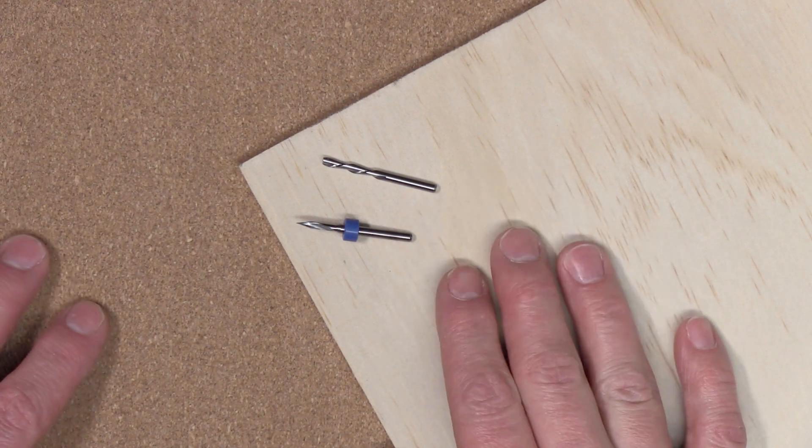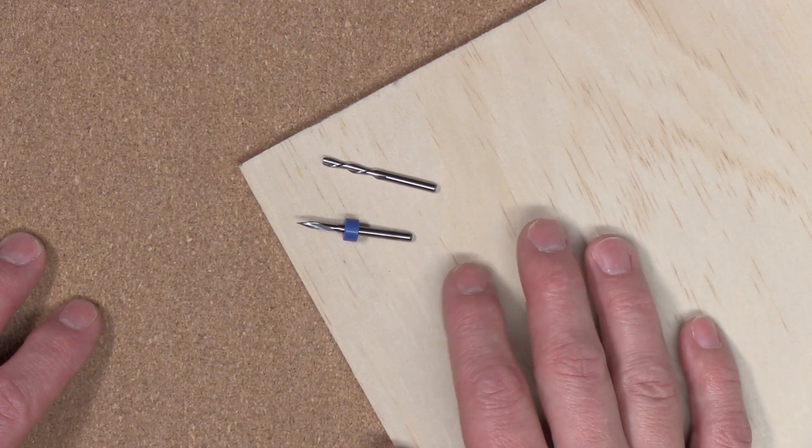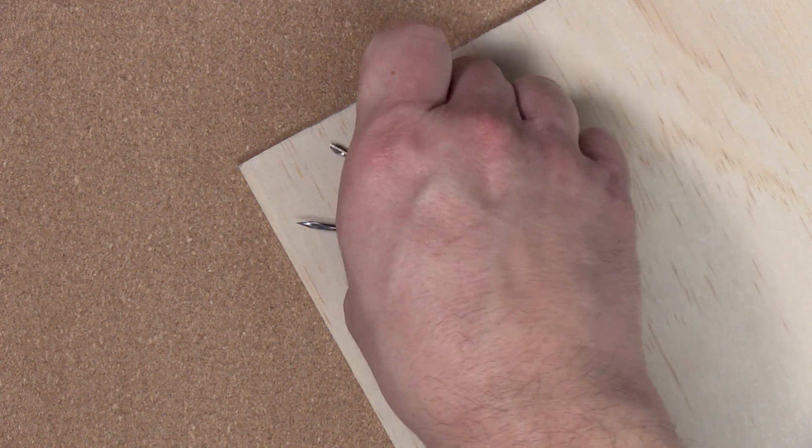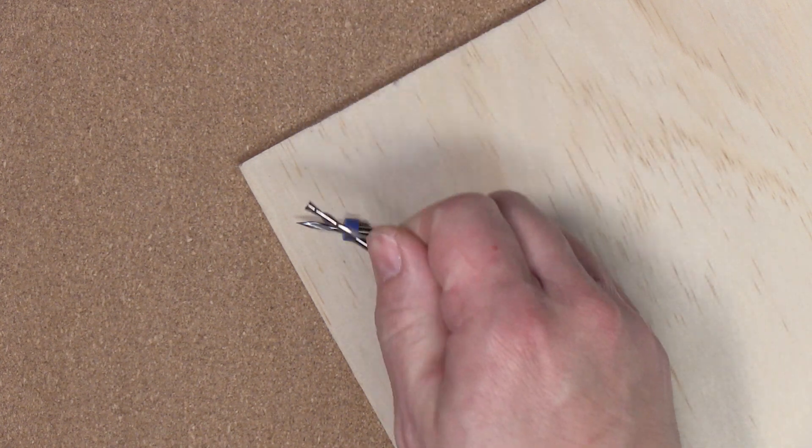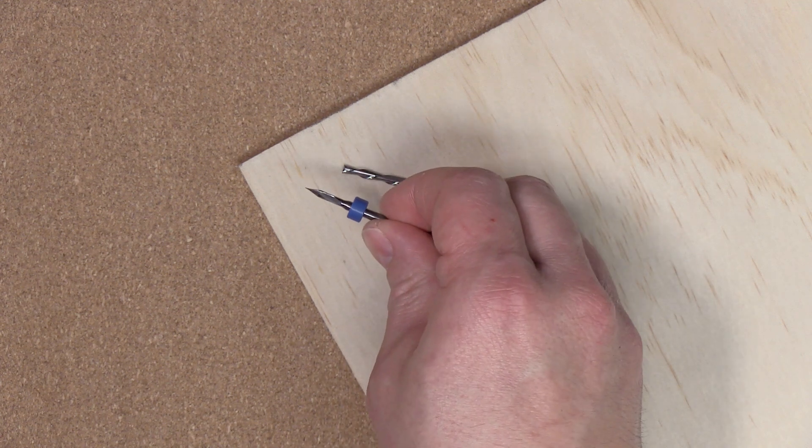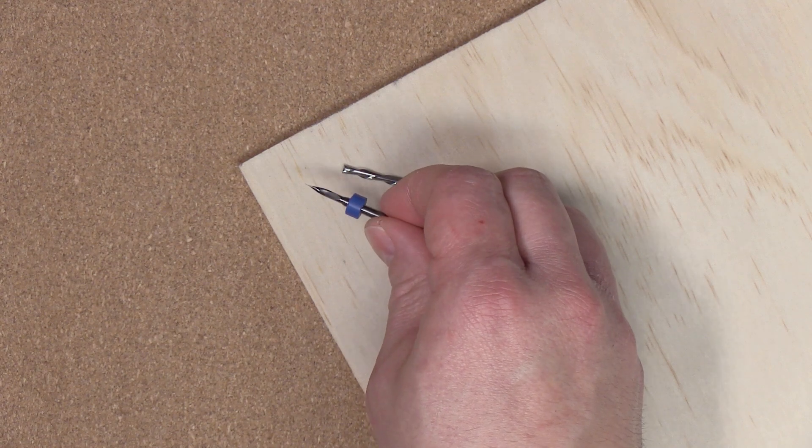For my phone stands I'll be using the six millimeter maple veneer plywood. I picked this up at my local box store for relatively cheap. To cut the plywood out I'll be using this 1/8 down cut bit and I'll be using a 1/8 30 degree v-bit to engrave my logo. Let's go ahead and run these projects and see what we get.